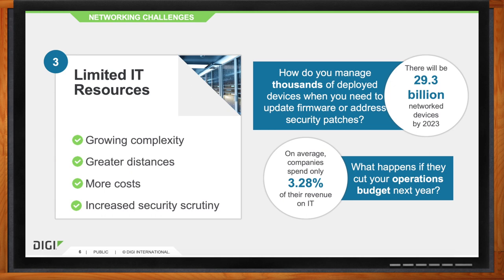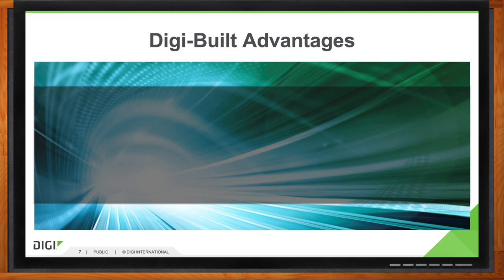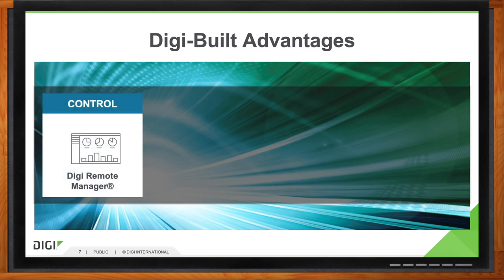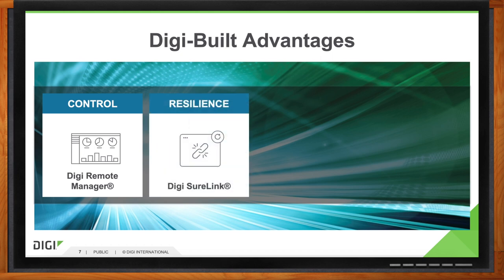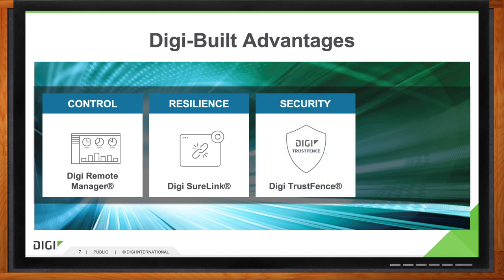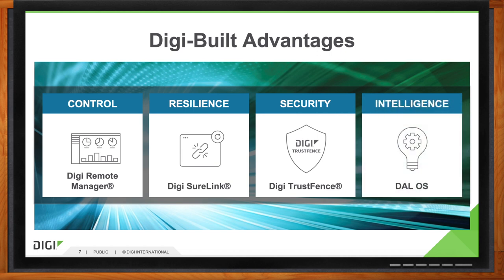To maintain an always-on, always-secure network, there are four must-haves. First and foremost is control - automation, visibility, remote access. Second is resilience - the conditions for maintaining a network are always changing, new devices are coming on, old devices are falling off. The key is to have a network with resilience, one that has strength and power but also has the next step and security built into the devices and the ongoing management and updates of those devices.